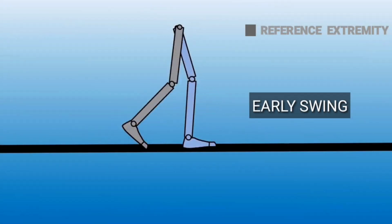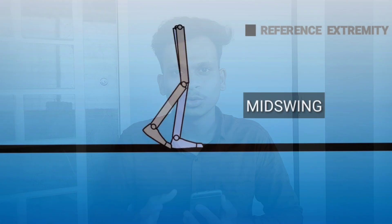Early swing begins at the end of the toe off phase and continues till the mid swing phase. The early swing phase occurs between 60 to 75 percent of the gait cycle.